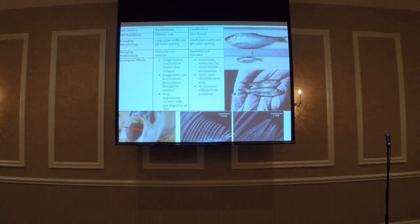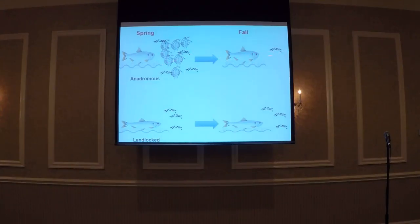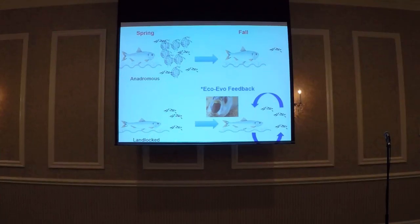The ecological effects of alewife on zooplankton are well-known. Anadromous fish, born as young of the year, enter freshwater lakes with abundant large-bodied zooplankton — like a buffet. They rapidly consume this, and when food is gone, they bail to the ocean, returning when they're spawning. Landlocked fish, in contrast, are constantly in the lake, always grazing on zooplankton, maintaining a population of small-bodied zooplankton at lower abundance. This has led to eco-evolutionary feedback, putting selection pressure on alewife for smaller foraging morphology — leading to rapid evolution.